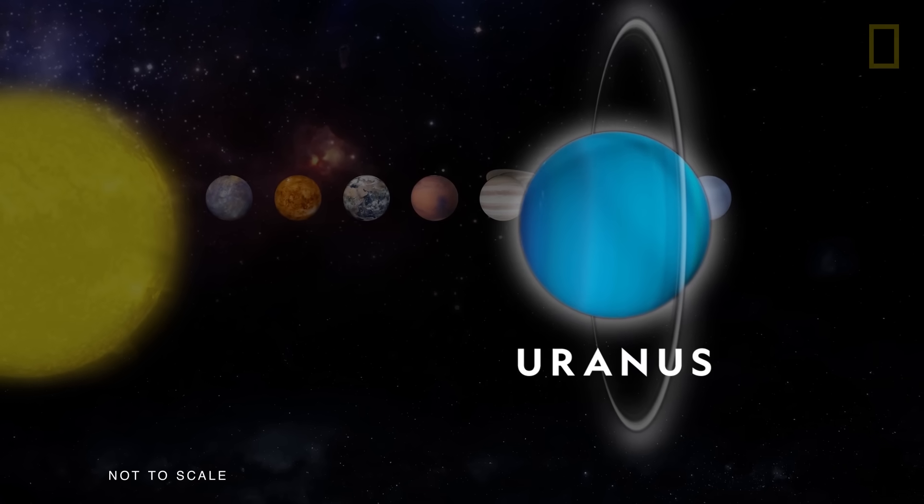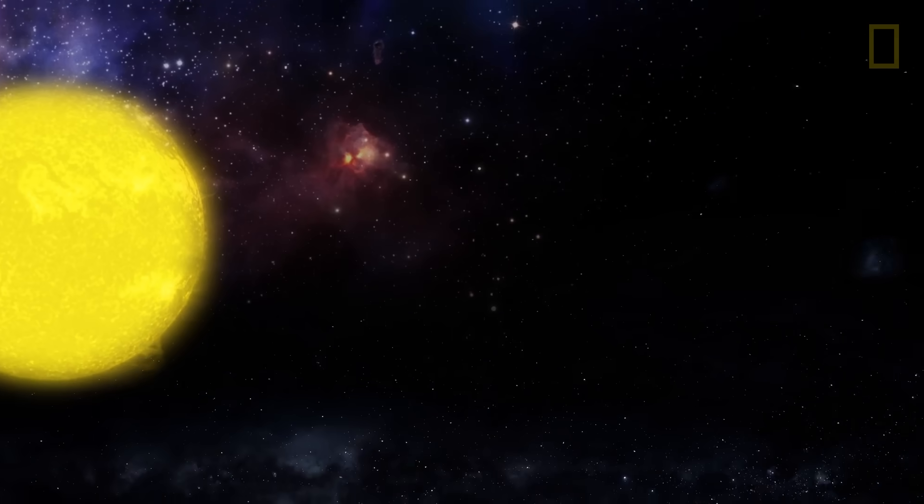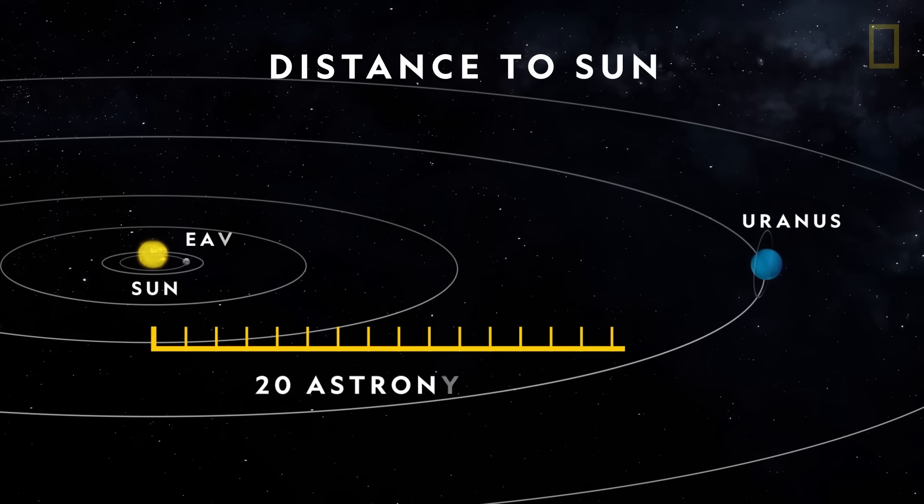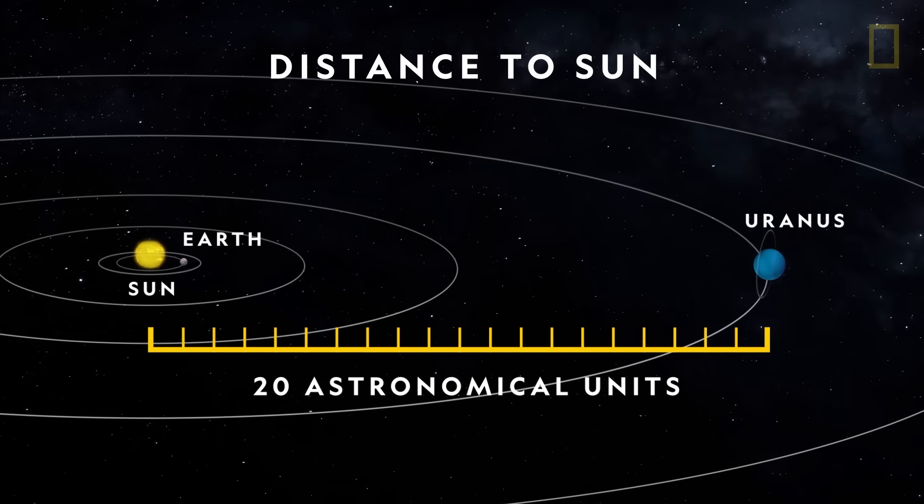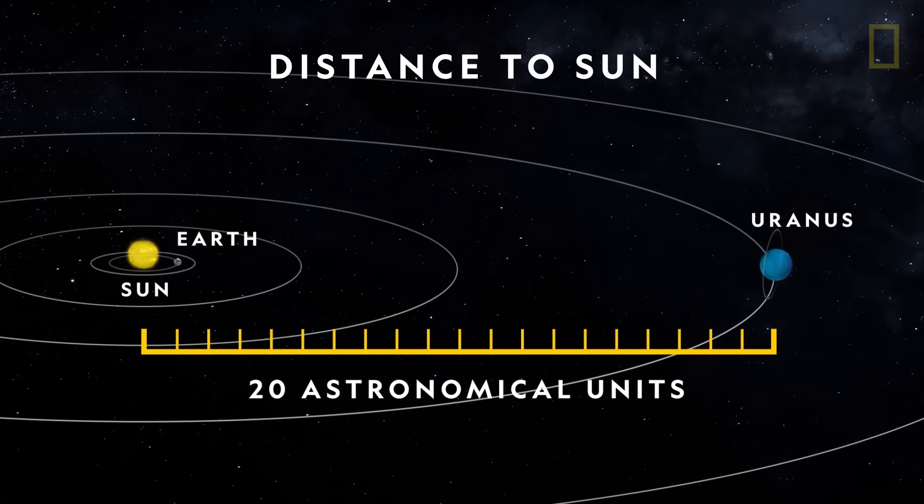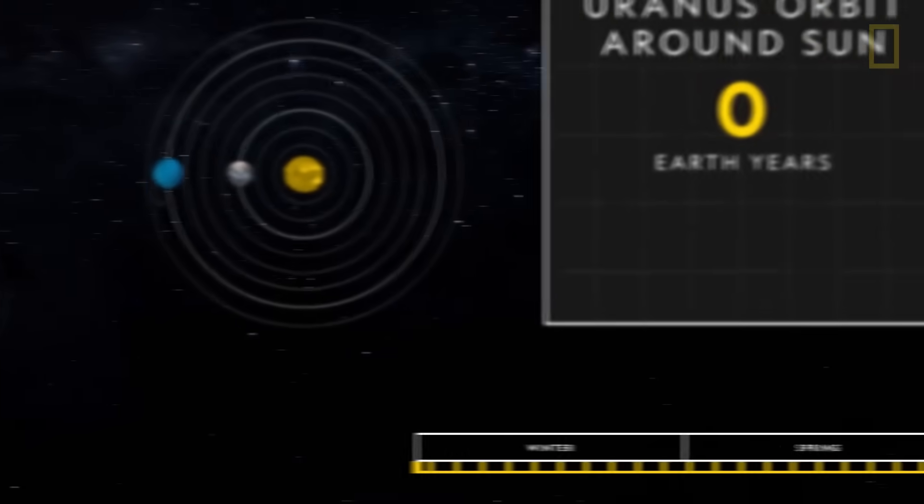Uranus is the seventh planet from the Sun. From a distance of about 20 astronomical units, or 20 times the distance between Earth and the Sun, Uranus orbits the star once every 84 Earth years, approximately the length of a human's entire life.